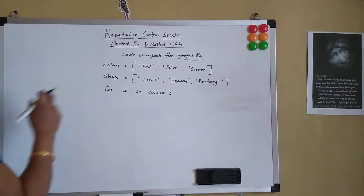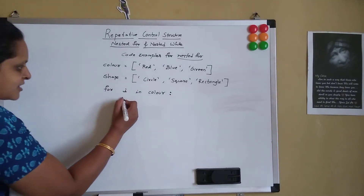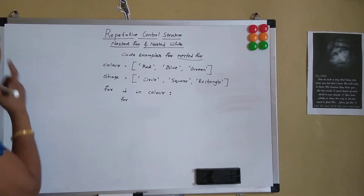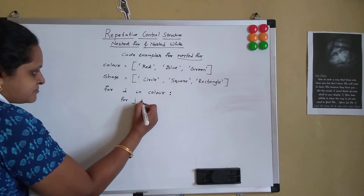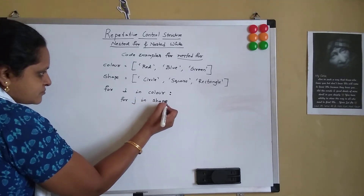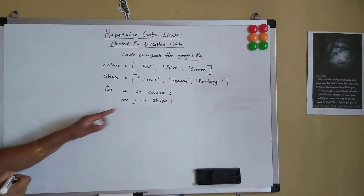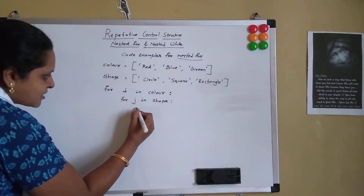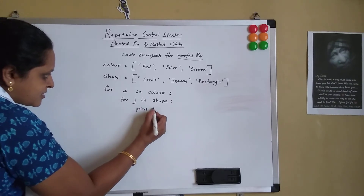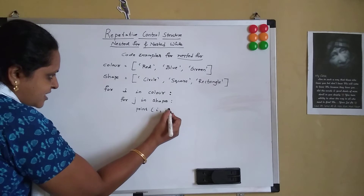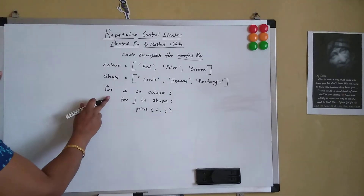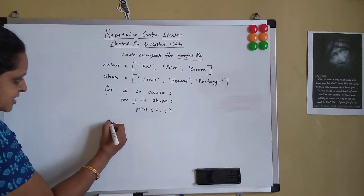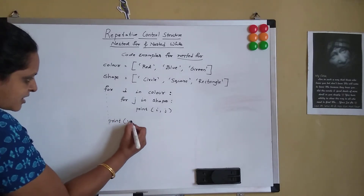This is the colon — the syntax for the for loop. For i in color, then I give another nested for loop. Since it is a part of the first for loop, it has to be indented by four spaces. For j in shape — iterating value and then a sequence. So now for this inner for loop, I am having one print statement: print i, j. And then the sequential flow of statements continues.